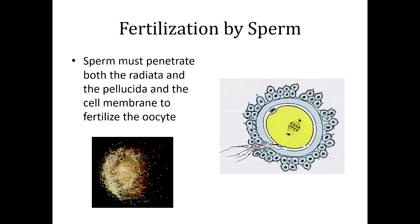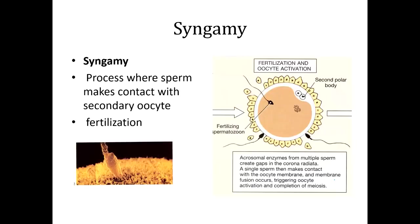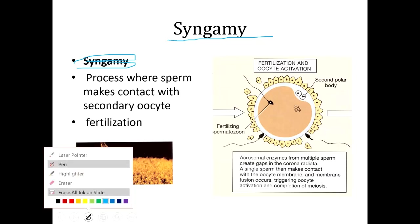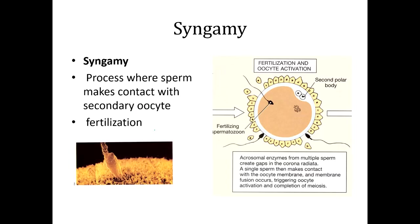The sperm itself has to penetrate both the corona radiata and the zona pellucida to get to the cell membrane. When one sperm fuses and releases its chromosomes, meiosis II completes in the oocyte, and the chromosomes from the sperm merge with that. There's a kind of flash where the cell seals off any other sperm from being able to fertilize. This is what we call syngamy — syngamy is fertilization, the process where sperm makes contact with the secondary oocyte.